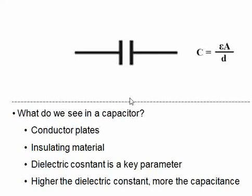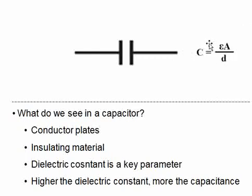If you look at a capacitor, basically we have two conducting plates which are separated by an insulating material. This insulating material is characterized by the dielectric constant. The type of insulating material — whether air or mica, whatever we say — all have some dielectric constant. Higher the dielectric constant of that insulating material, more the capacitance. This can be understood by the formula: C = εA/D, where epsilon is related to permittivity and is the dielectric constant of the insulating material, A is the area of the plates, and D is the distance between the plates.